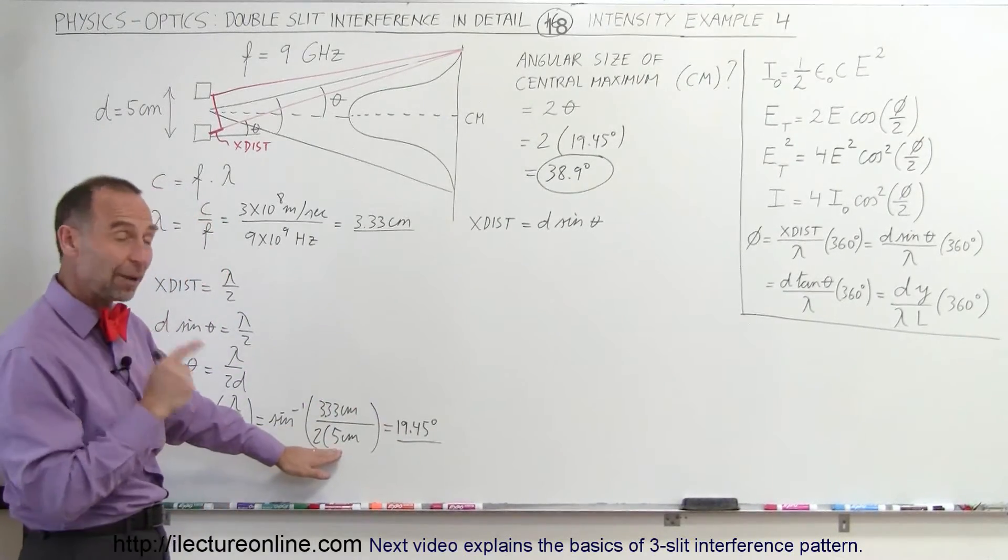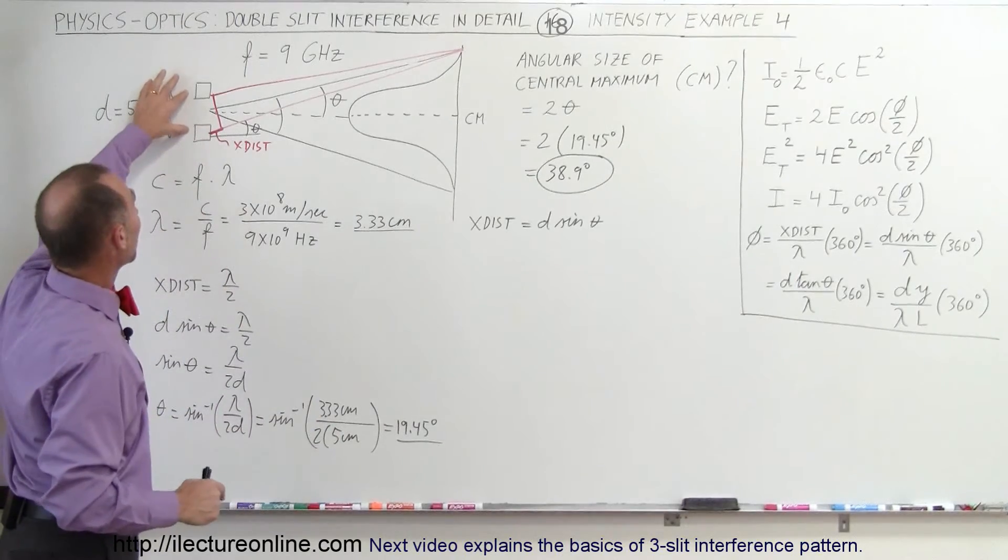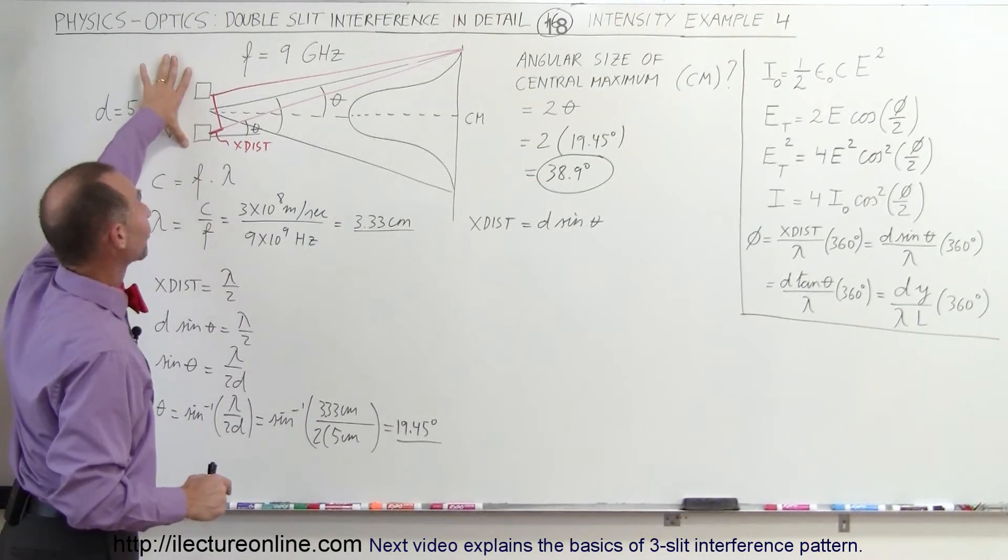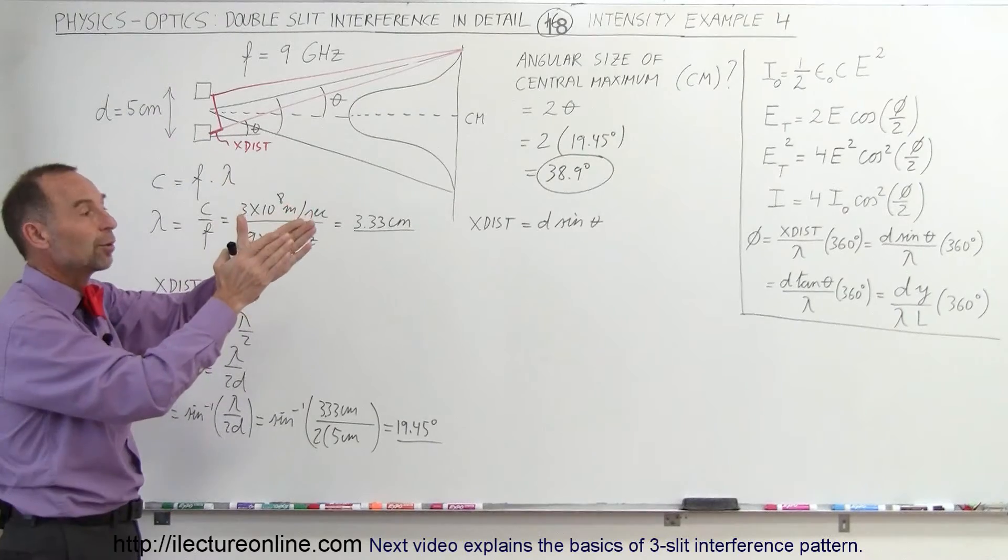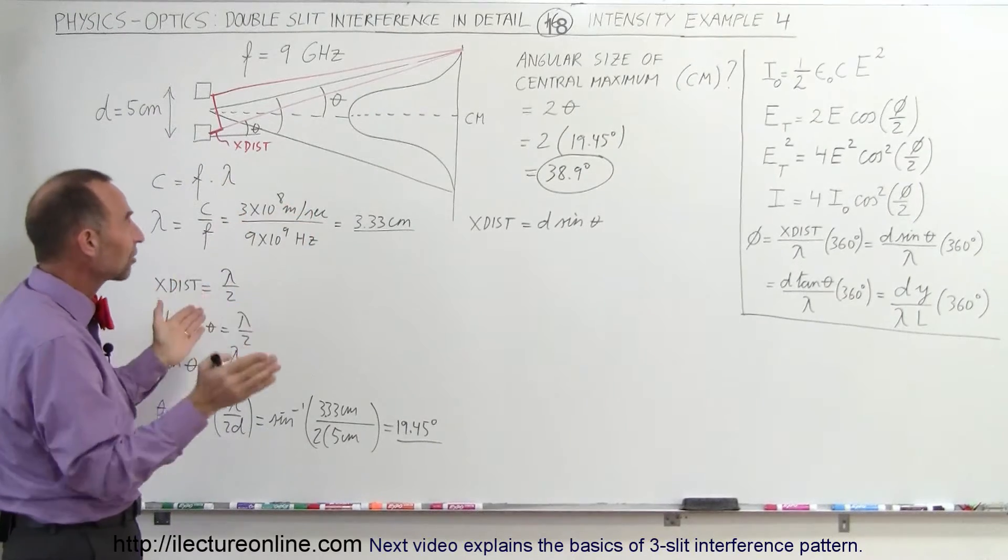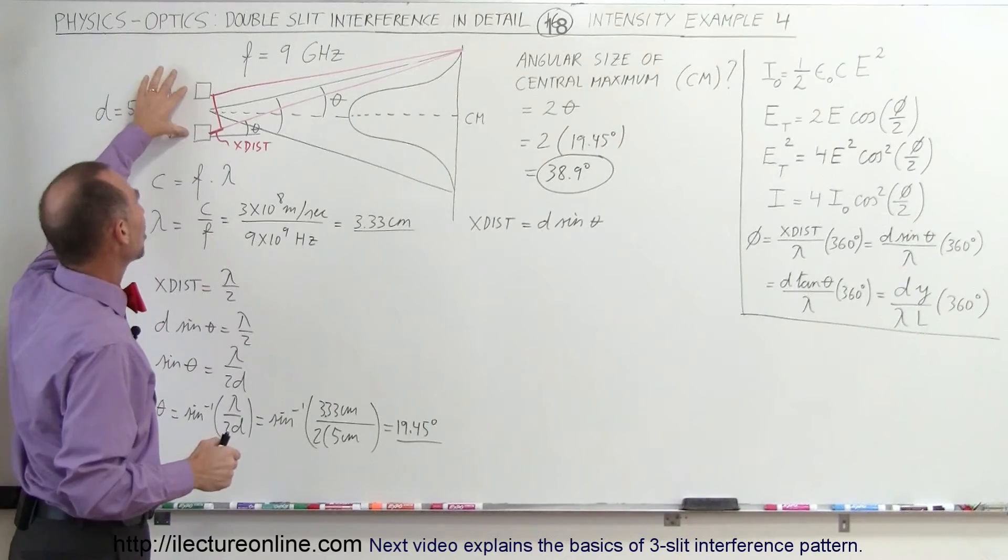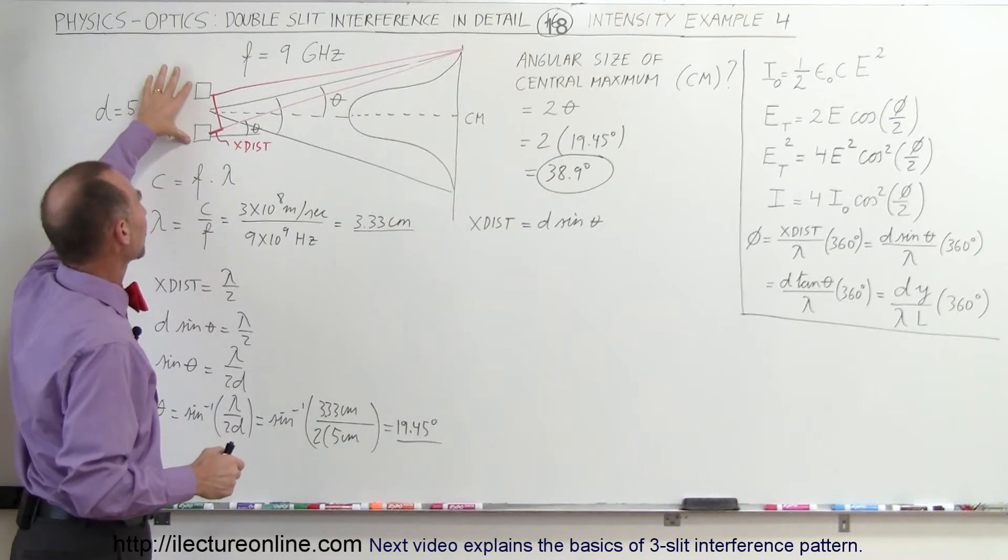We can get a narrower beam by moving these two elements further out. It's interesting how we can actually shape the beam by changing the distance between the two antennas.